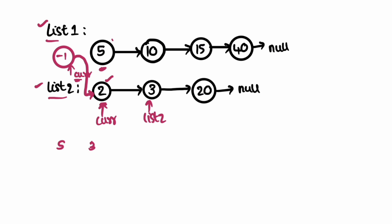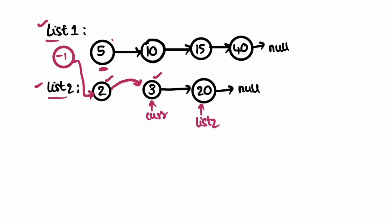Now we pick the element at list one, which is five, and list two, which is three. Three is the minimum, so current points to three. We move list two forward to the next node, and list one stays in place. Current moves to the last processed node. Next, we compare five from list one with twenty from list two — five is minimum, so current points to five and list one moves forward.